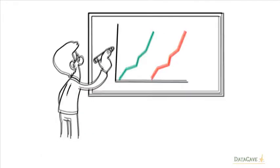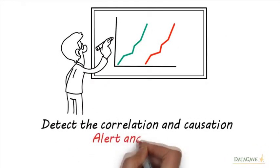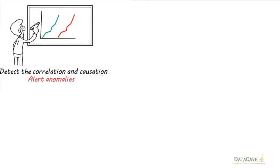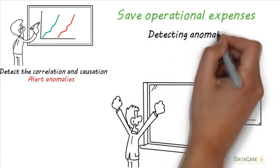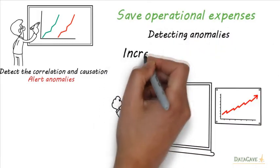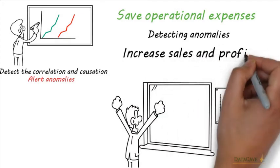we help our customers detect the correlation and causation inside the data and alert for any anomalies outside the normal data behavior. This saves operational expenses by detecting anomalies. Plus, understanding all correlations inside your business can dramatically increase sales and profit.